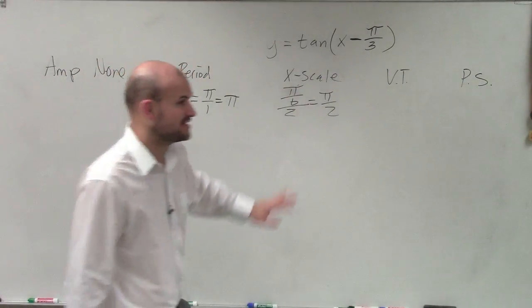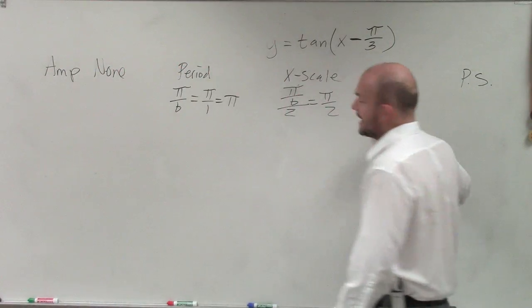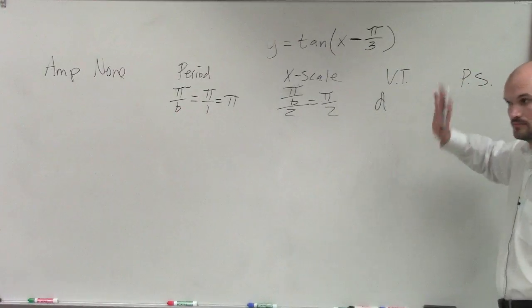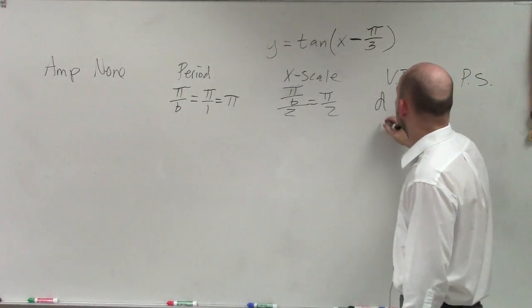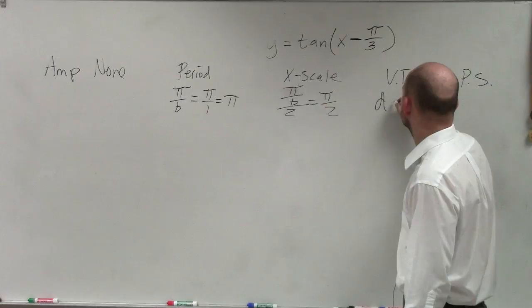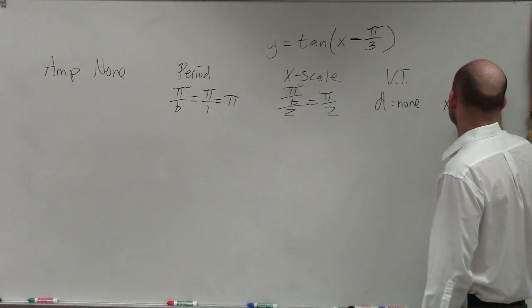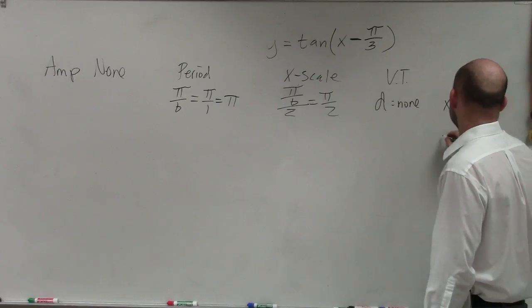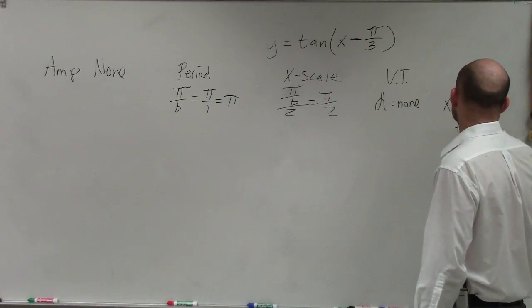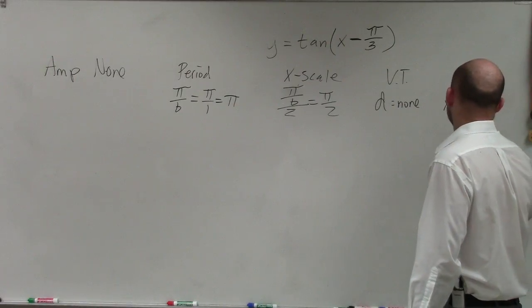Then my vertical transformation is d. Anything adding or subtracting outside my function? Nope. So that's going to be none. And phase shift, you do the exact same thing. x minus π over 3 equals 0. Add π over 3 to both sides. x equals π over 3.